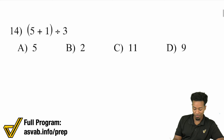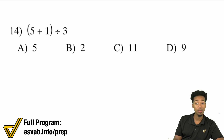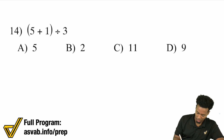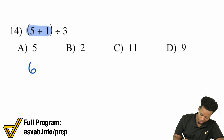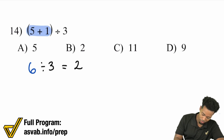Number 14: We have (5 plus 1) all divided by 3. I'm going to do all 25 here. 5 plus 1 is going to give me 6, and 6 divided by 3 equals 2. B.